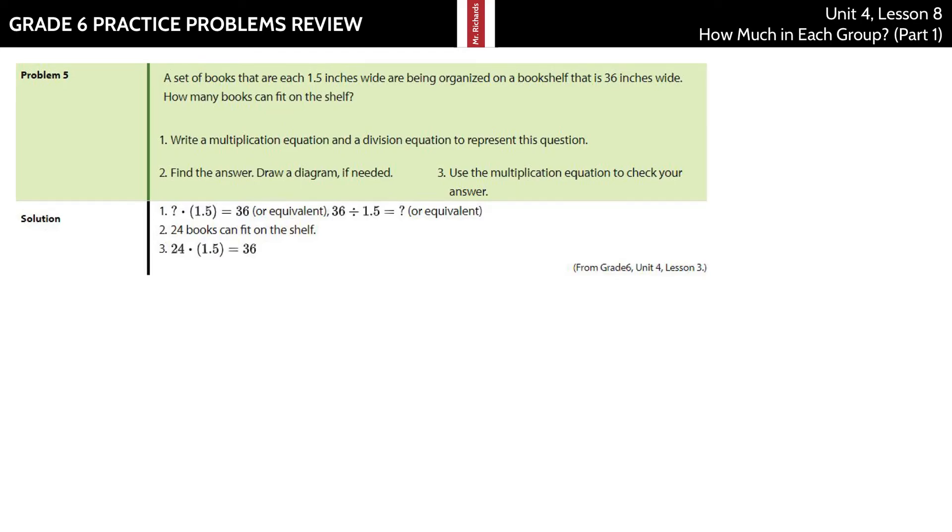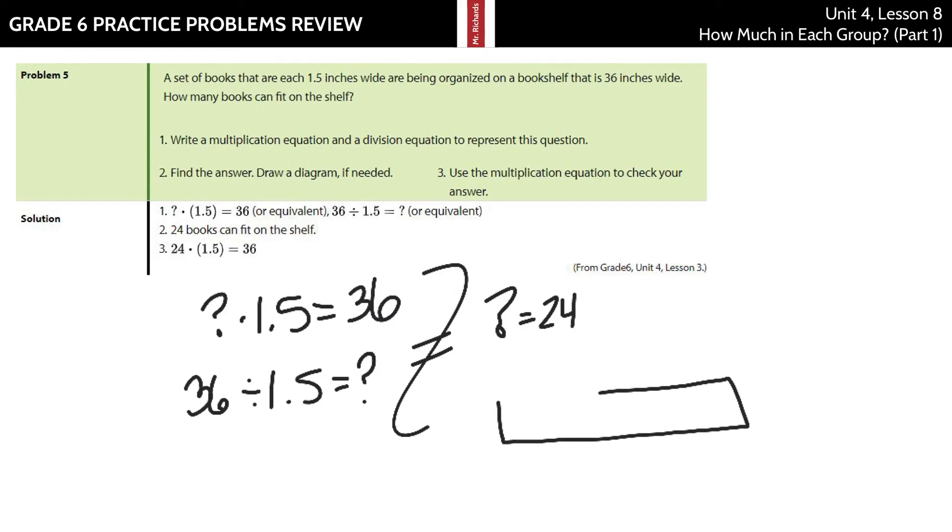So basically, how many books times the one and a half inches is going to be 36 inches? Or, in other words, 36 divided by one and a half equals what? Well, that what is going to equal 24.